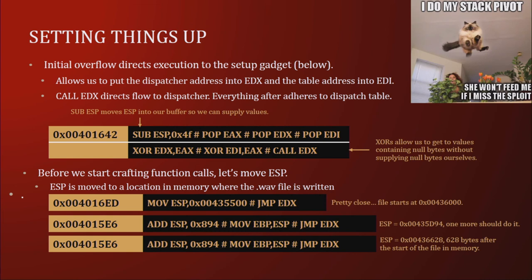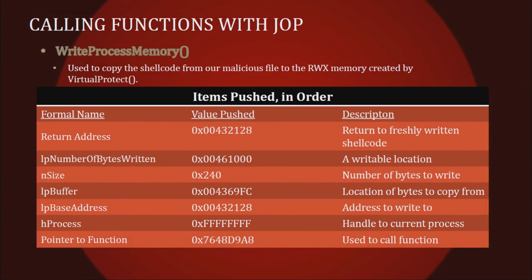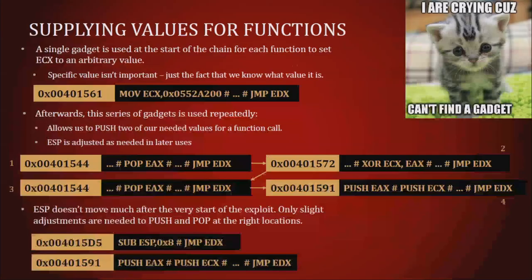To do that we move ESP to a known location — it just makes things a little bit easier. Then we're calling the API functions and setting up VirtualProtect — we provide the necessary parameters. Then we do WriteProcessMemory and provide those parameters. With VirtualProtect we can make it so that memory is read-write-executable rather than just read-write. Supplying values for those functions: we get ECX to a known value, then we'll modify it with XOR, then pop a value into EAX, do the XOR on it, then pop another value into EAX — now we have two values that we can push onto the stack.